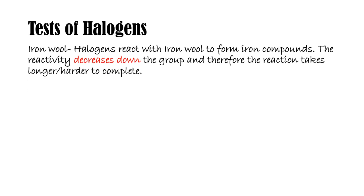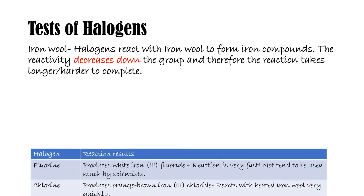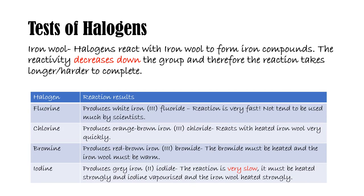Iron compounds can be formed through reacting halogens with iron wool. The reactivity decreases down the group, so the reaction is slower or may need specific conditions. When reacted with fluorine, this produces white iron(III) fluoride — the reaction is very fast and not often used by scientists. When reacted with chlorine, this produces an orange-brown iron(III) chloride, which reacts with heated iron wool very quickly. When reacted with bromine, it produces a red-brown iron(III) bromide — the bromine must be heated and the iron wool must be warm. Finally, when reacted with iodine, it produces a grey iron(II) iodide. The reaction is very slow and must be heated strongly, with the iodine vaporized and the iron wool heated as well.